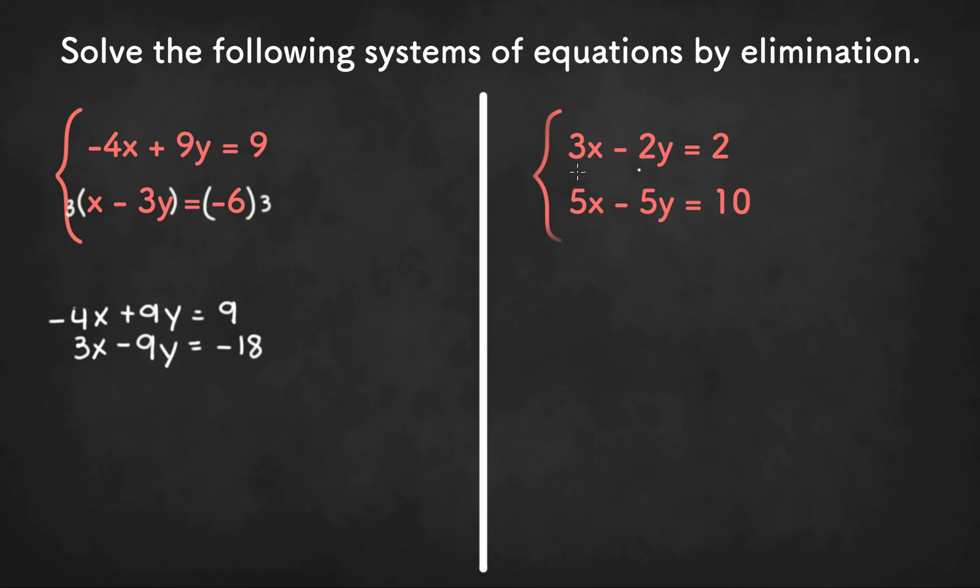Now this next equation we don't have any factors, so we need to multiply to get the least common multiple of one pair of coefficients. So we can get the least common multiple of three and five so we can eliminate x values, or we can get the least common multiple of negative two and negative five. So let's do negative two and negative five since the least common multiple is ten.